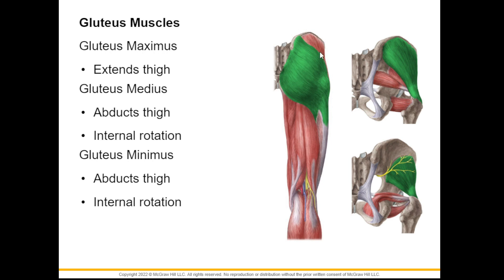On the back part we have the gluteus maximus. We also have the gluteus medius on the side and underneath that the gluteus minimus. The medius and minimus have the same function: internal rotation of the thigh. The gluteus maximus is for extending the thigh, or putting the legs backwards.